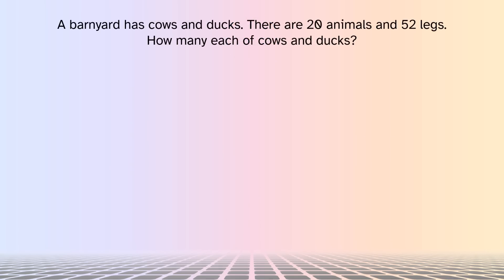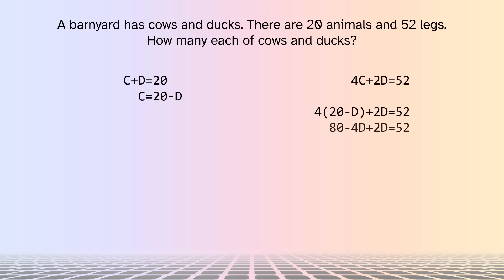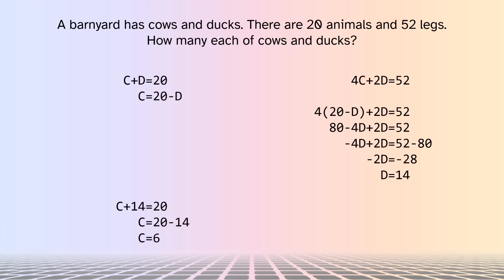Let's take an example. A barnyard has cows and ducks. There are 20 animals and 52 legs. How many each of cows and ducks? These types of questions are common in a textbook or an entrance exam because they demonstrate mastery of several algebraic concepts: the commutative property, the substitution property, the principle of equality, and use of variables as an abstraction. Even negative numbers may be difficult for some people.